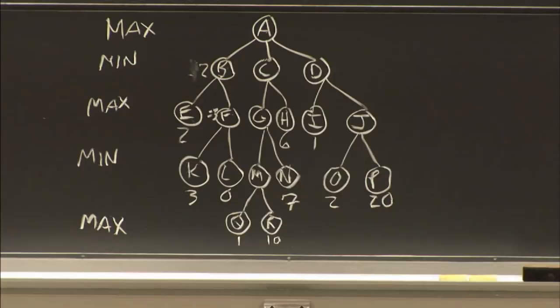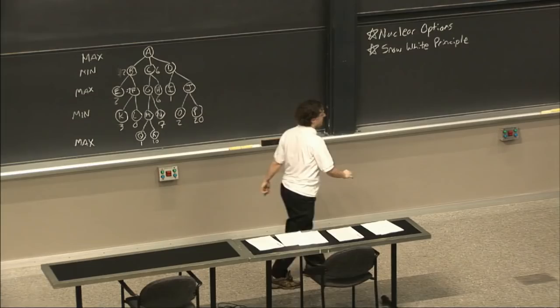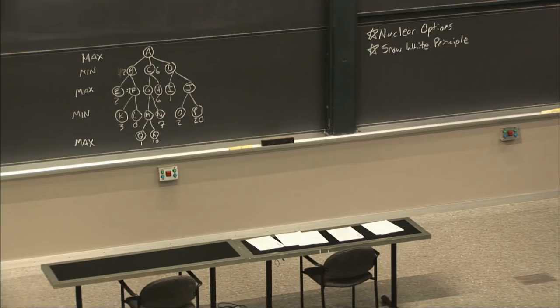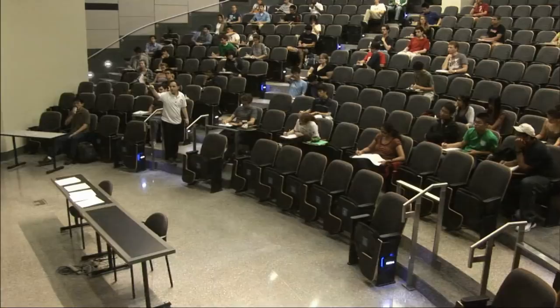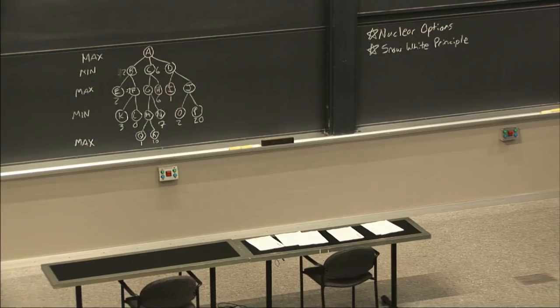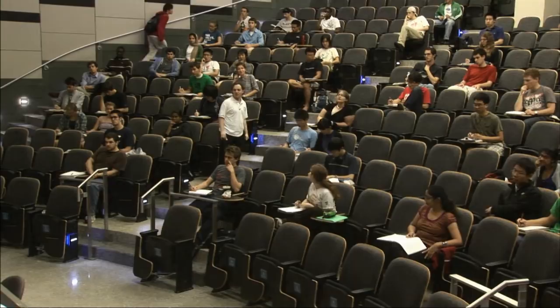Now we go down to D. At D, we go down to I, which is just 1. We go down to J — the Minimax value at J is 20, which is the maximum of 20 and 2. So the Minimax value at D is 1. And therefore the Minimax value at A is 6. 6 is higher than 2, higher than 1. Our value is 6.